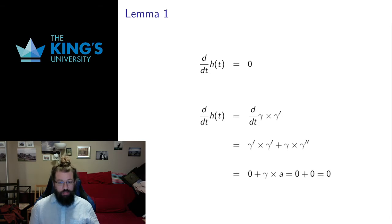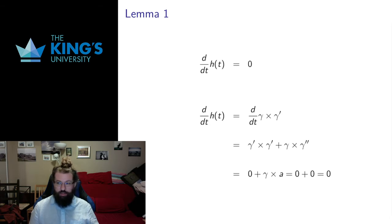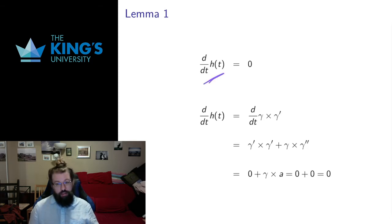I'm going to define a couple of lemmas that will be useful for the proof. A lemma is a little piece of a proof done off to the side that we can refer to later. First, I want to show that the vector H never changes — that the derivative of H is going to be zero.